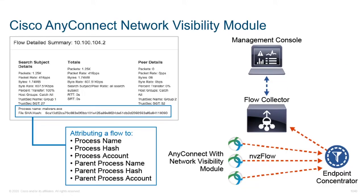We also have the AnyConnect Network Visibility Module, sometimes written as NVM. It helps to see user endpoint behavior. If we have end user devices — laptops, mobile devices, iPhones — with an AnyConnect client on them, we're going to have an endpoint concentrator that brings all that data into the flow collector. It allows us to evaluate any devices that might not physically be on our network but are coming in through the AnyConnect VPN client.